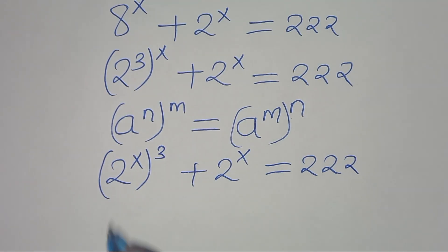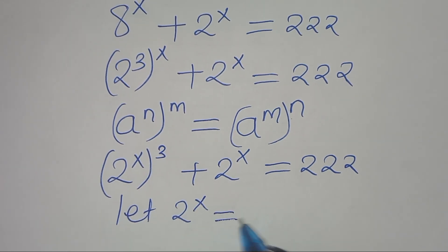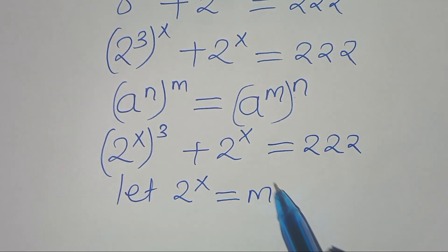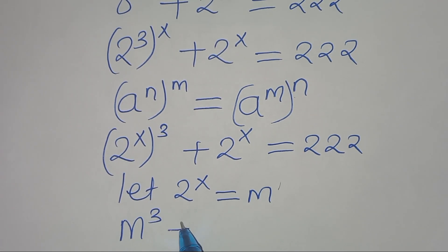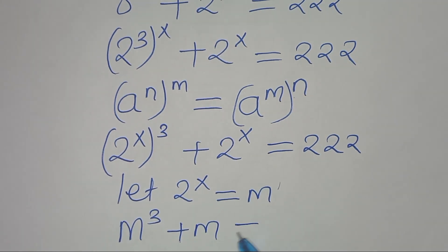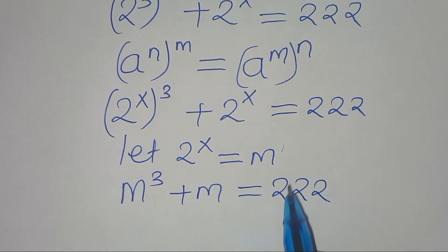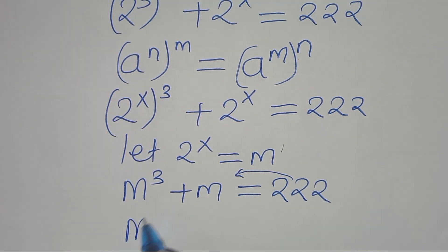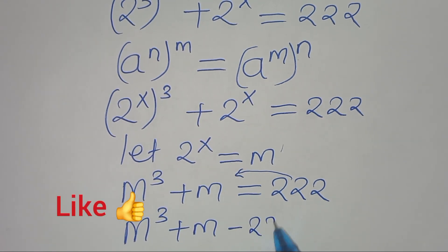The next step is that we can say, let 2 to the power x be equal to m. Let's substitute 2 to the power x with m. So we have m to the power 3 plus m, this is equal to 22. The next step is, let's take 22 to the left-hand side, so that we have m to the power 3 plus m minus 22, this is equal to 0.